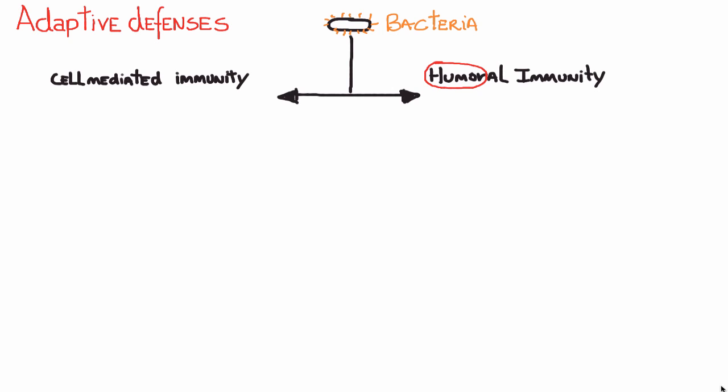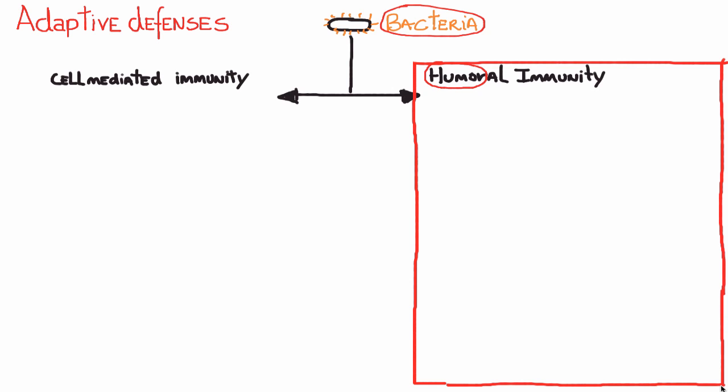Cell-mediated immunity will involve cells. Taking a closer look at the bacteria I drew, I put orange spikes around it because they represent proteins found on the surface of the bacteria. These proteins are called antigen determinants or epitopes — they are essentially the flags that your immune defenses can recognize as foreign. The word 'antigen' means antibody generator.